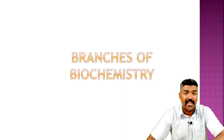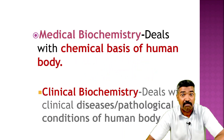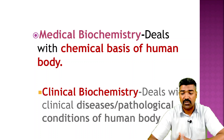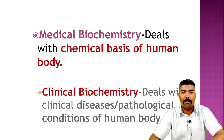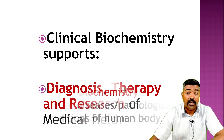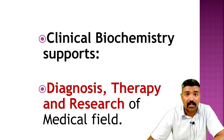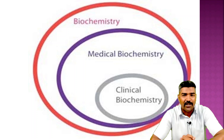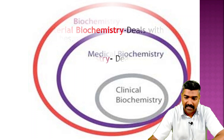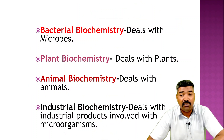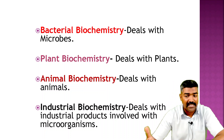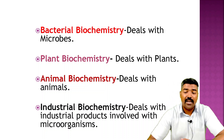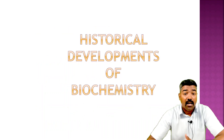The branches of biochemistry are as follows. Medical biochemistry deals with the chemical basis of the human body. Clinical biochemistry deals with clinical diseases and pathological conditions of the human body, and it supports diagnosis, therapies, and research in the medical field. Bacterial biochemistry deals with microbes, plant biochemistry deals with plants, and animal biochemistry deals with animals. Industrial biochemistry deals with industrial products involving microorganisms.